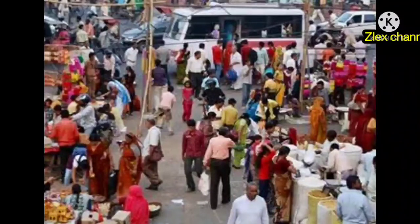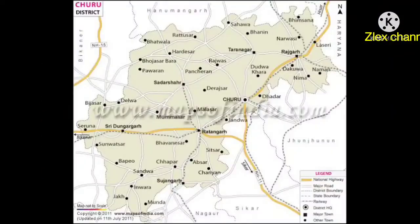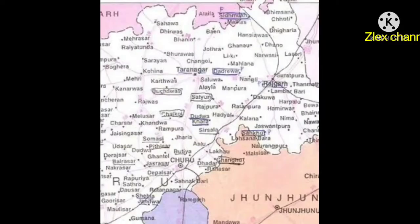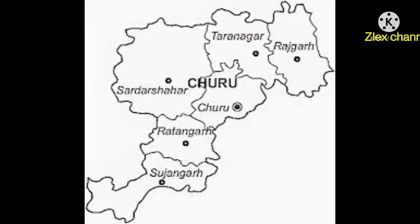The tehsils of Churu, their villages, population, and area are as follows. First, Churu tehsil has 111 villages, population 3,10,562, and area 1,607 km². Second, Rajgarh has 218 villages, population 3,62,582, and area 2,209 km². Third, Ratangarh has 104 villages, population 2,92,059, and area 1,693 km².